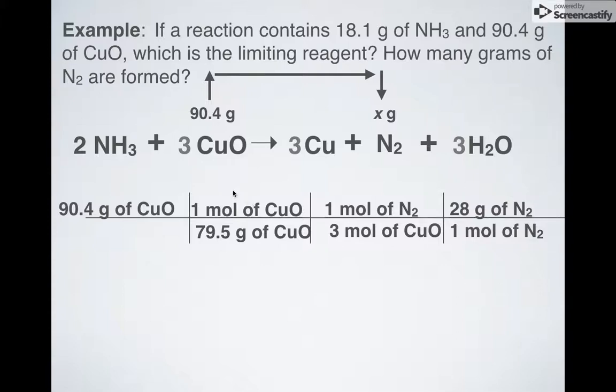So just like before, I have my first step divided by molar mass, second step, mole ratio, third step, multiply by molar mass. And everything cancels except for the grams of N2 which is what I want. So in your calculator do, 90.4 divided by 79.5 divided by 3 times 28. That'll give you about 10.6 grams of N2.